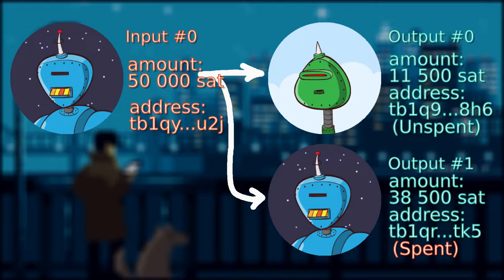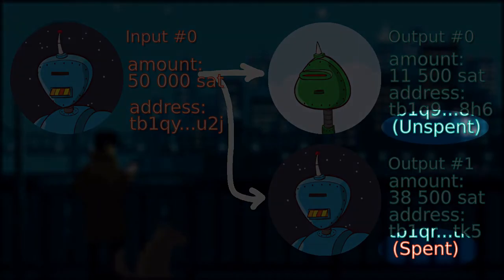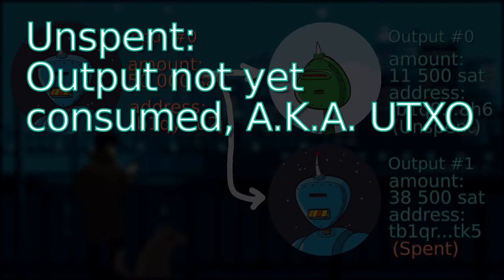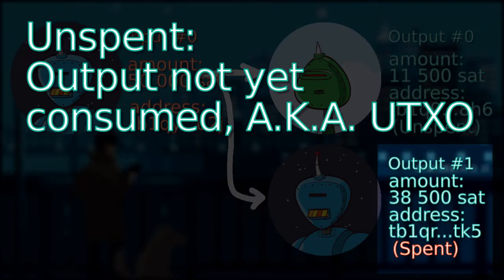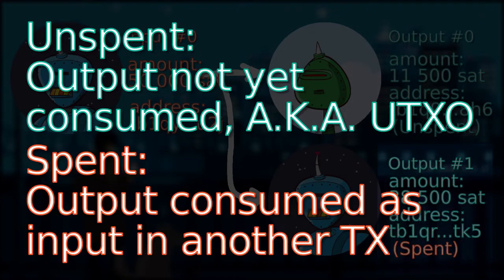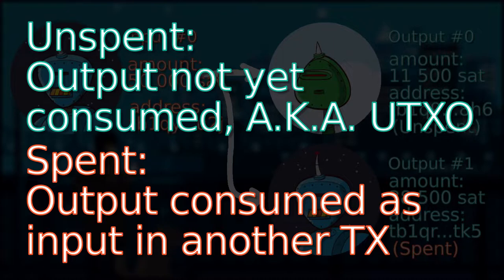You might have noticed that I have added the spend and unspent status of the UTXO in this example transaction. Unspent means that this UTXO has not yet been consumed as an input in another transaction, whereas the change output has the status of spent, meaning that the change Q&A sent back to himself has been used in another transaction.